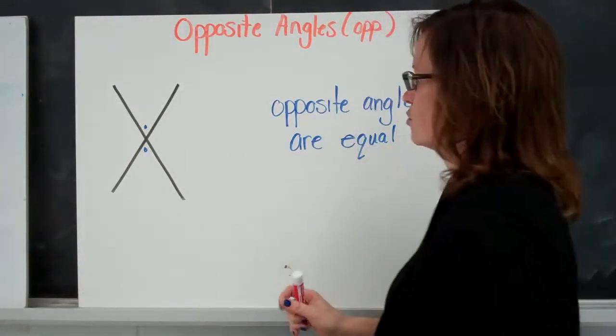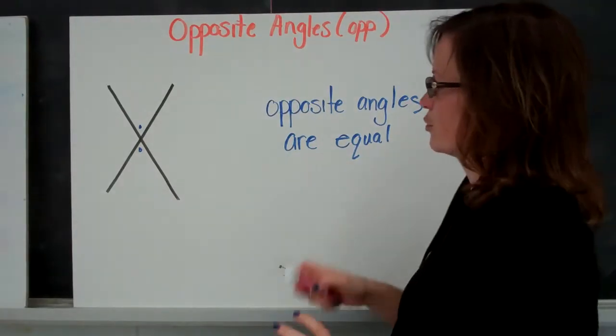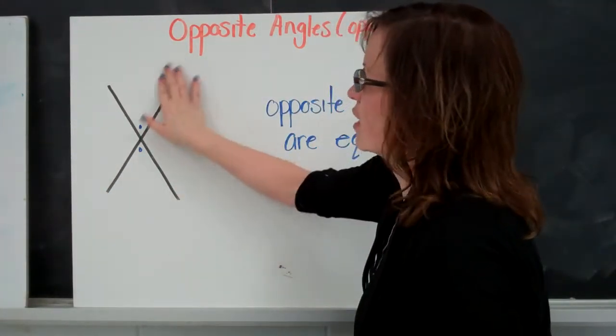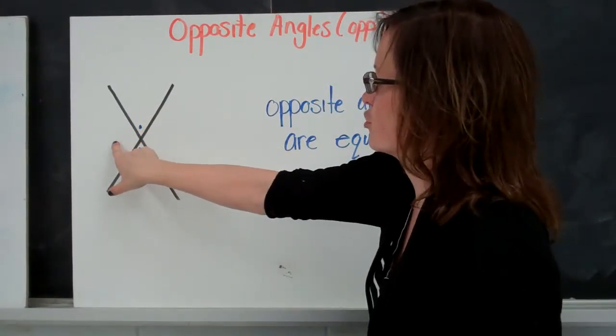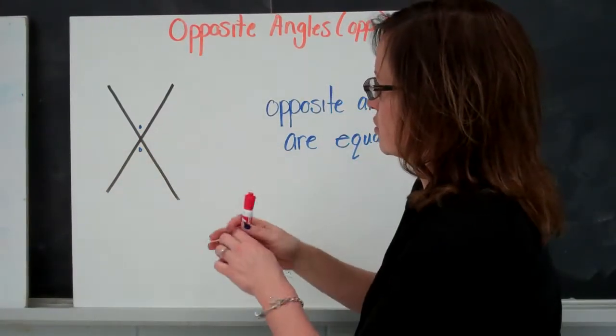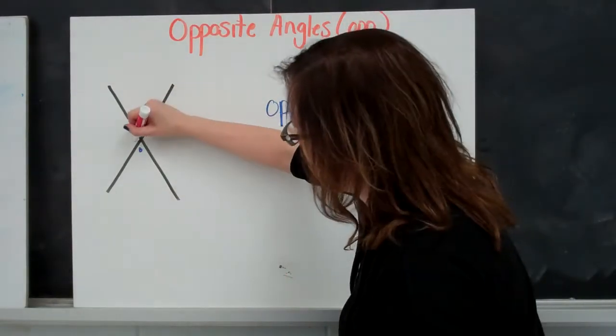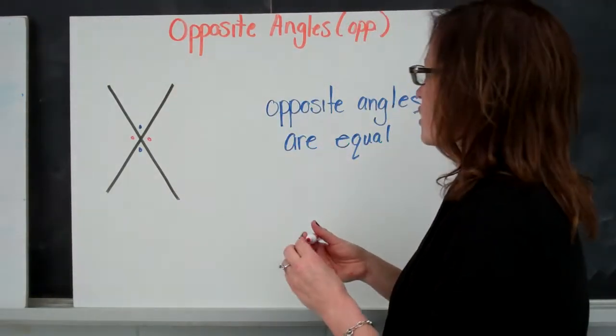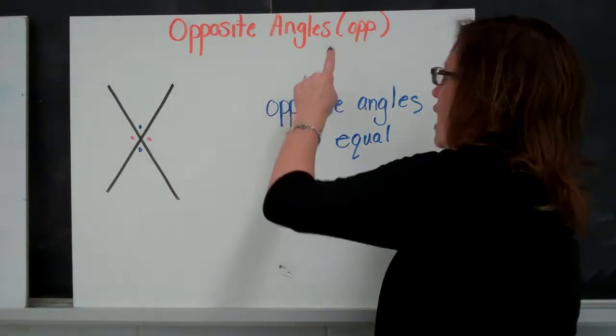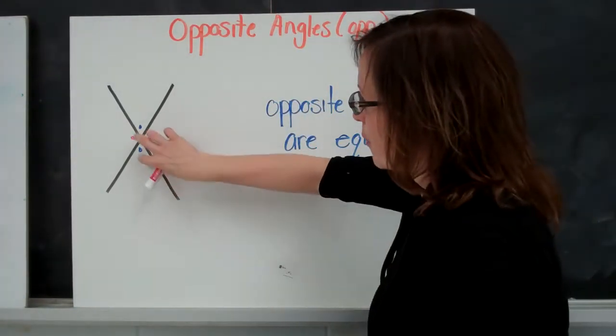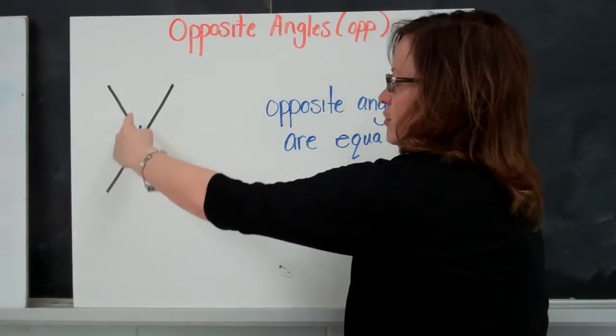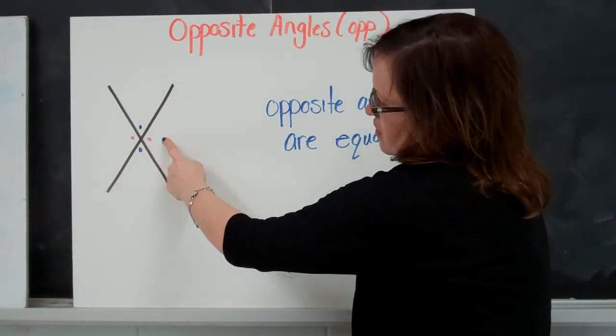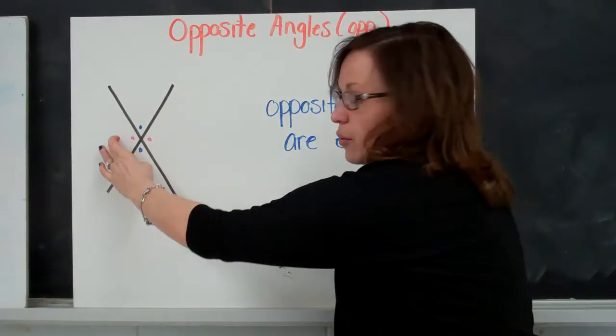And the last one - the opposite angles rule. When you have two lines that crisscross like an X, you have opposite angles. There's two sets of opposite angles here. The opposite angles rule is that opposite angles are always equal. So if this angle is 65 degrees, so is this angle. If this angle is 120 degrees, so is this angle.